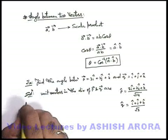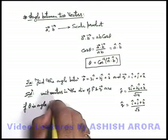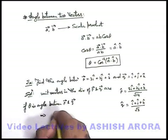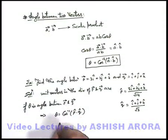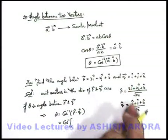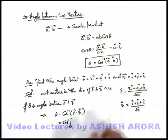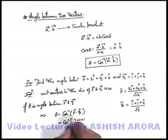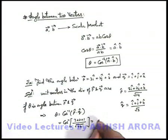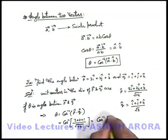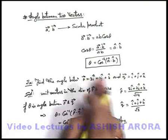If θ is the angle between P and Q, then θ = cos⁻¹(p̂·q̂). Taking the dot product: 3×1 + 2×1 + 1×1 = 3 + 2 + 1 = 6, divided by √14 × √3 = √42. So θ = cos⁻¹(6/√42) = cos⁻¹(√6/7). This is the angle between the given vectors P and Q.